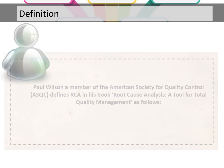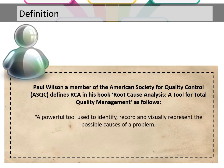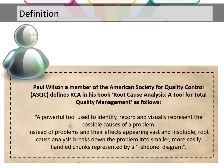Paul Wilson, a member of the American Society for Quality Control (ASQC), defines RCA in his book 'Root Cause Analysis: A Tool for Total Quality Management' as follows: a powerful tool used to identify, record, and visually represent the possible causes of a problem. Instead of problems and their effects appearing vast and insoluble, root cause analysis breaks down the problem into smaller and more easily handled chunks, represented by a fishbone diagram.